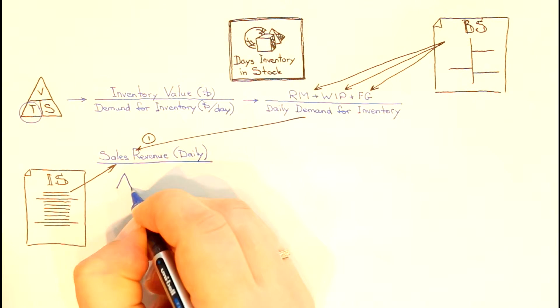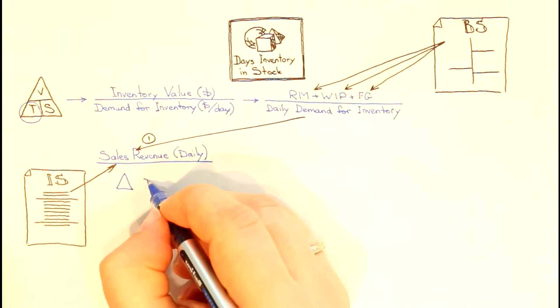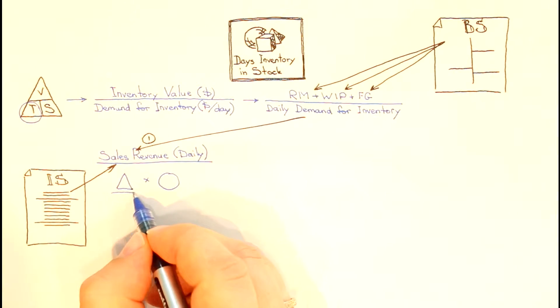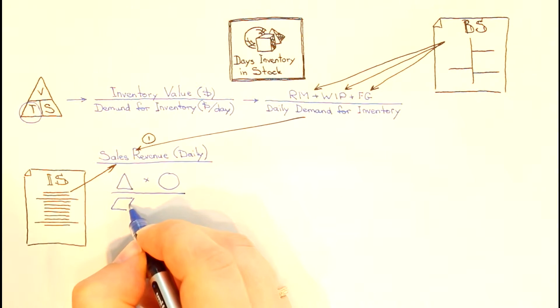By taking daily sales for inventory daily demand figure in our formula, we compare sales value at sales prices with three inventory components amounts at three different prices. Those two are incompatible.